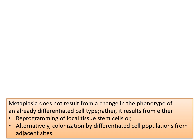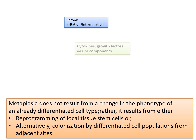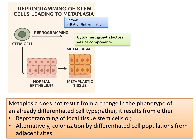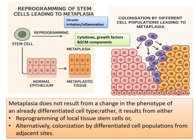Metaplasia does not result from a change in the phenotype of an already differentiated cell type. It results from either reprogramming of local tissue stem cells or colonization by differentiated cell populations from adjacent sites. When there is chronic irritation or inflammation, cytokines, growth factors, and extracellular matrix components are released, causing reprogramming of the stem cell, thereby converting normal epithelium into metaplastic epithelium. Another mechanism is colonization by different cell populations migrating towards native tissue and transforming into metaplastic cells.